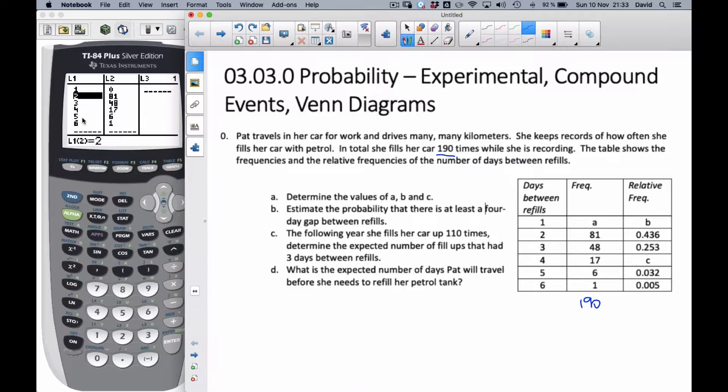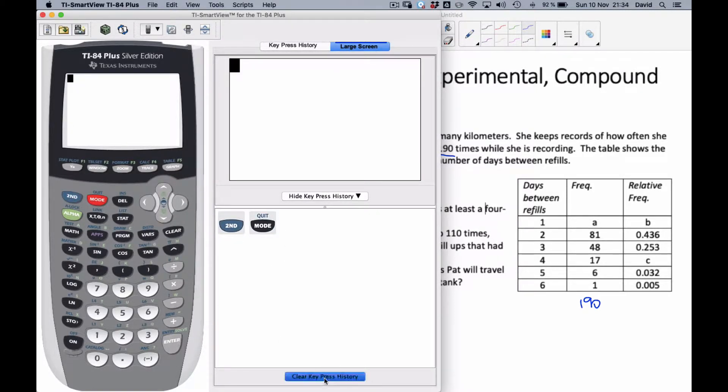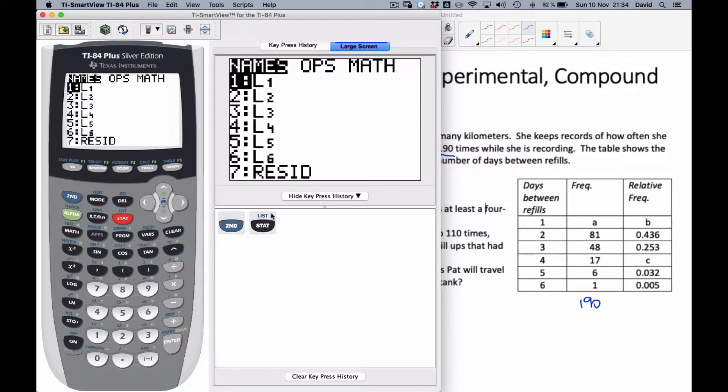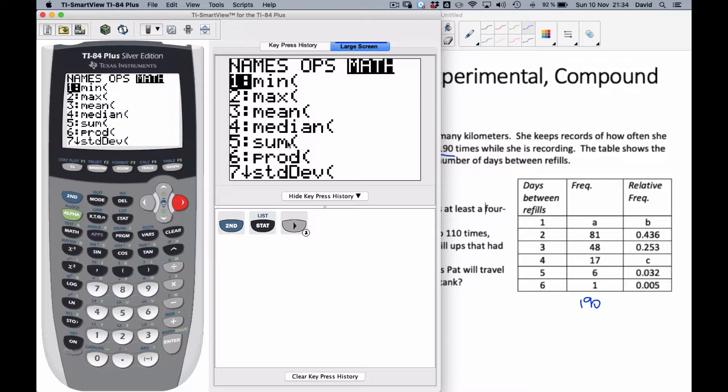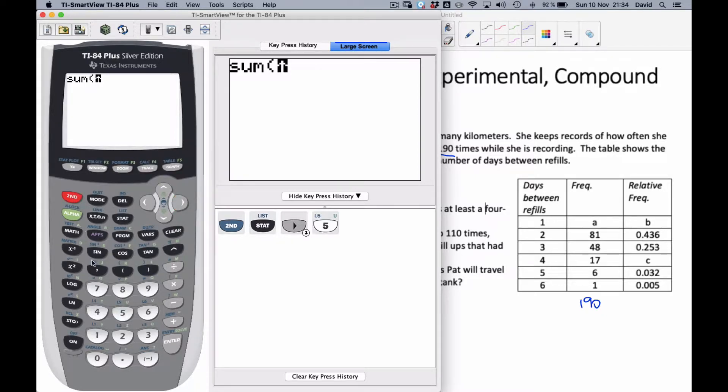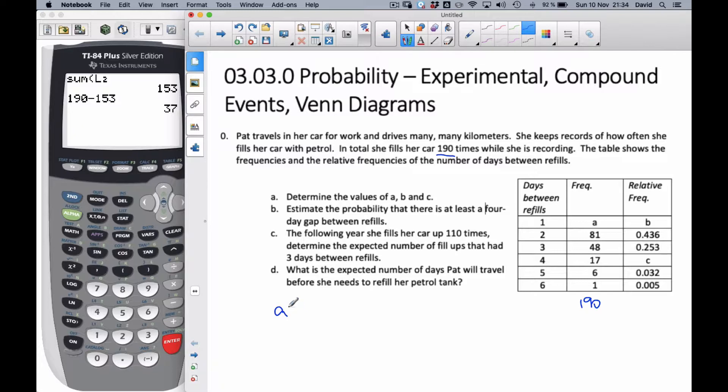So I've taken the liberty to add L1 and L2 in, but I put 0 in for L2, just to hold its spot for the first cell. And if I quit this, what I'm going to do is go to this list thing, second list, which is above the statistics. And then I'm going to go over here and see the different options available. When I go to the math option, I can see number five says sum. I want the sum of L2 and the sum of L2 is 153. So all these values here, 81, 48, 17 is 153. So if I subtract these, I can see that A is equal to 37.